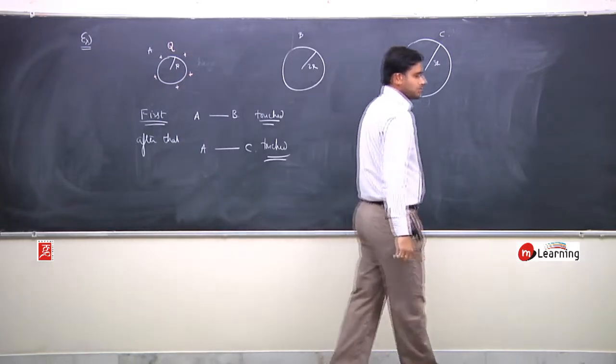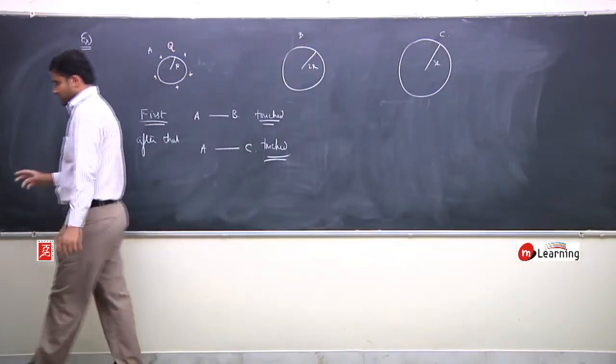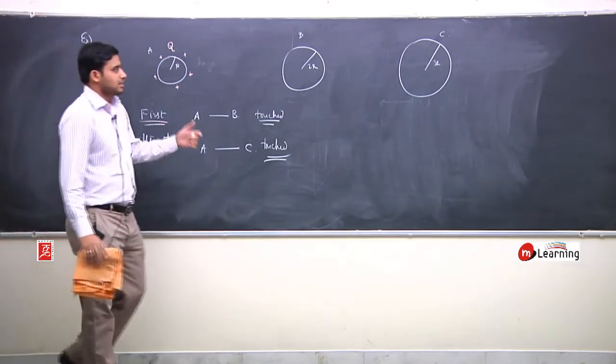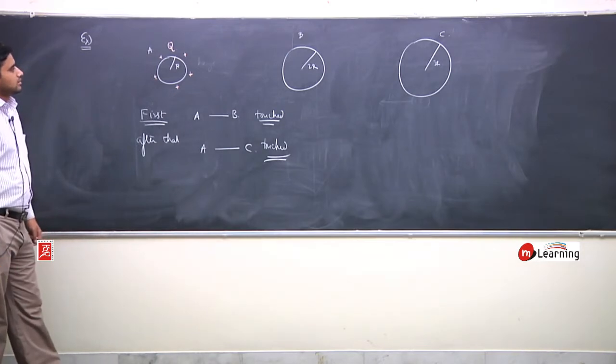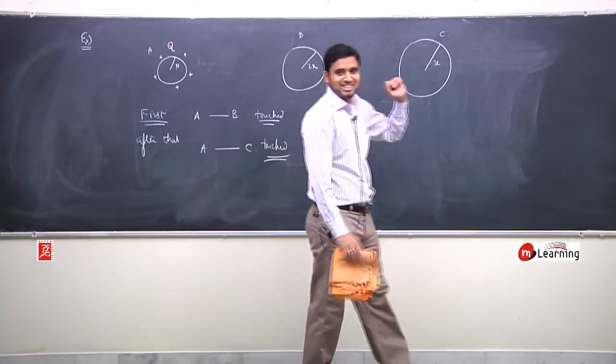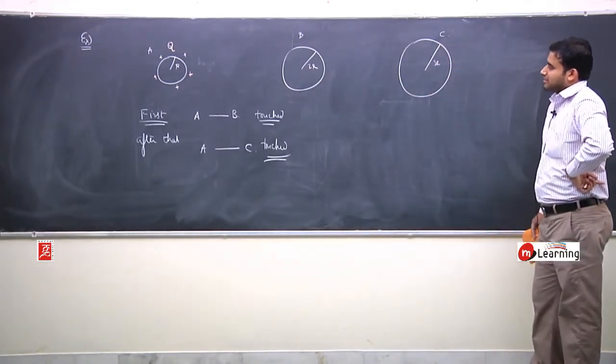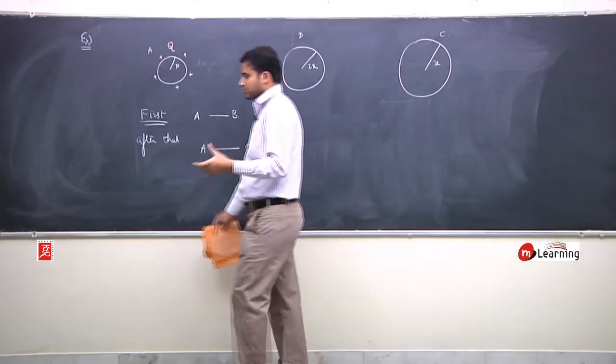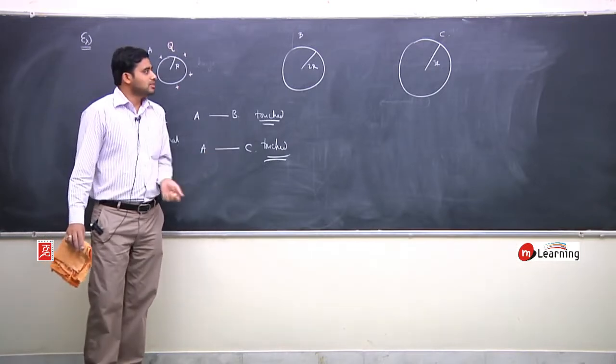So finally, A, B aur C, tino pe kitna kitna charge hoga ye batana hai. Final charge on each sphere. Conducting spheres ko touch karoge, to charge ka distribution hoga. Sabse pehle baat, ki agar aap do conductors ko connect kar rahe hain, to dono ka potential same hona chahiye finally. Uske hisaab se charge ka distribution hota hai.